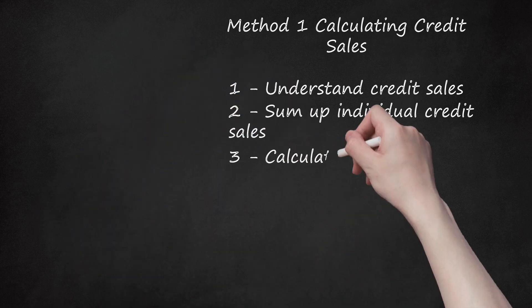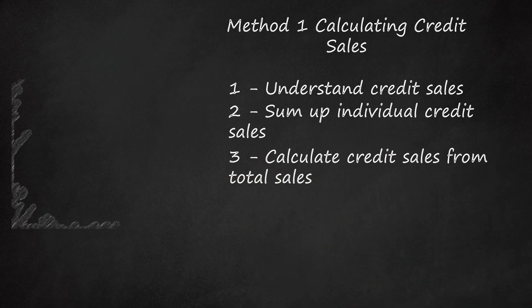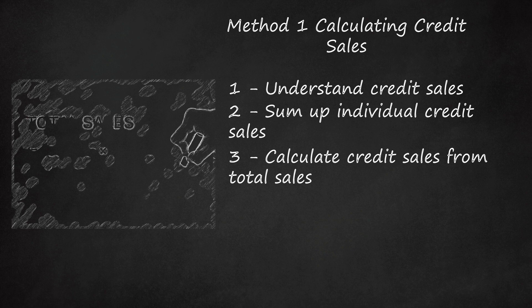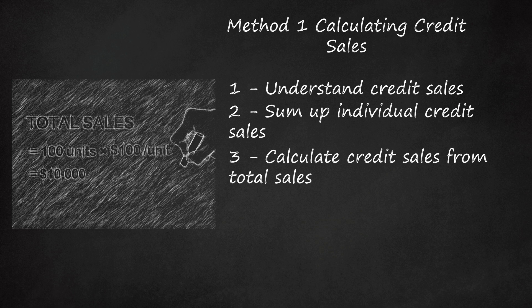Calculate credit sales from total sales. Total sales can be calculated as number of goods sold multiplied by the selling price. However, this can be complex if you offer different products at different prices. For example, if a company sold 100 units of laptops at $100 apiece, its sales would be 100 times 100 equals $10,000.